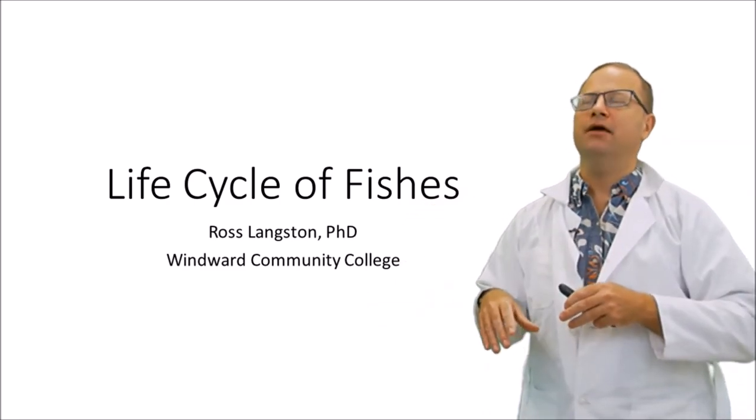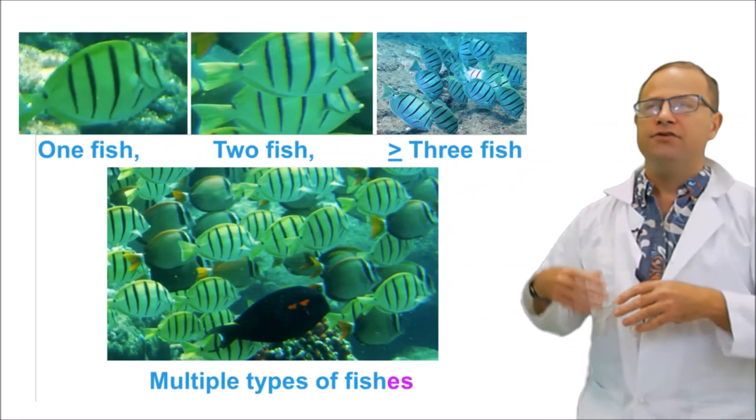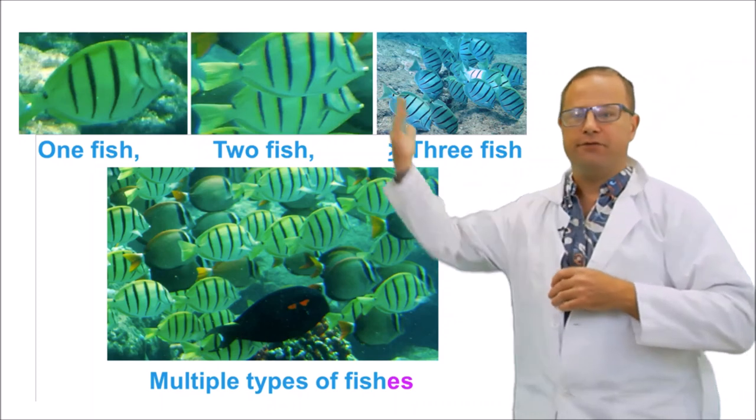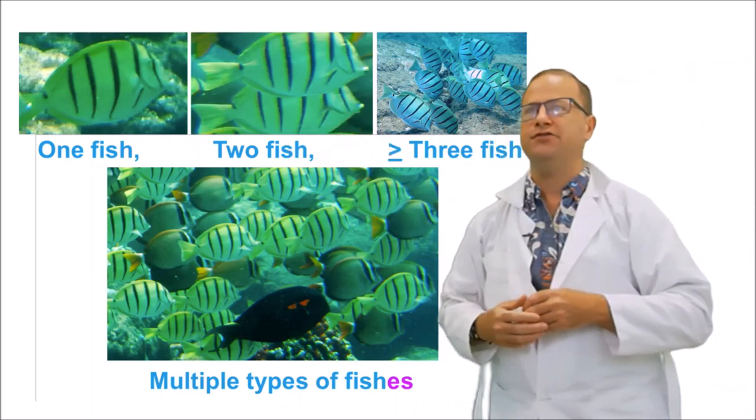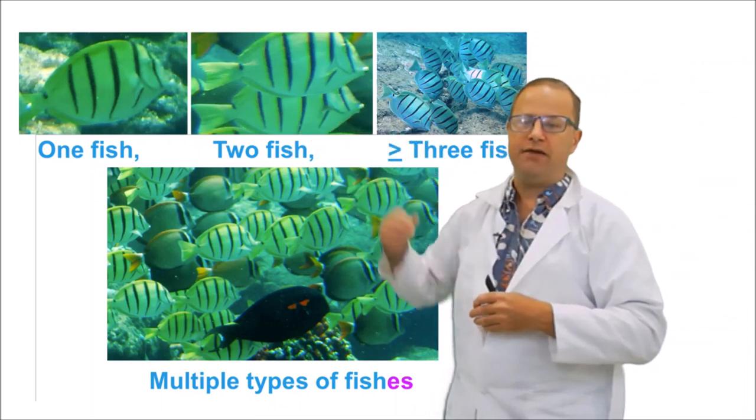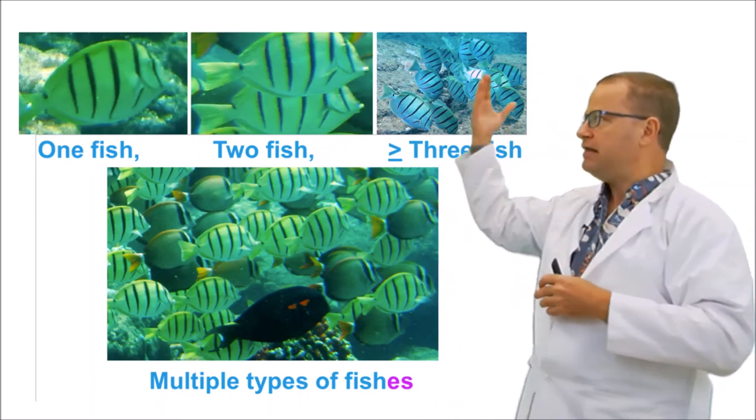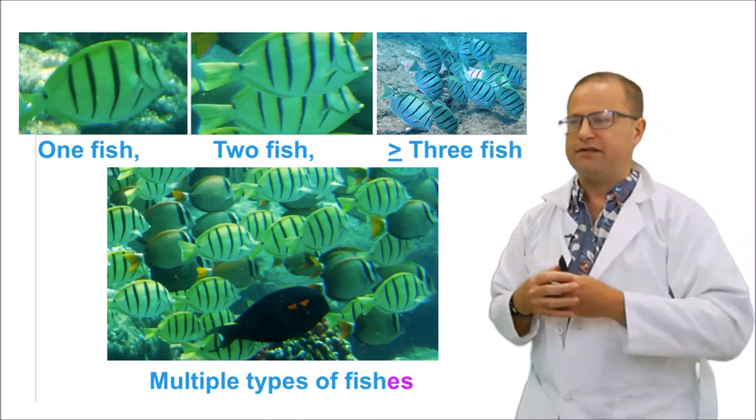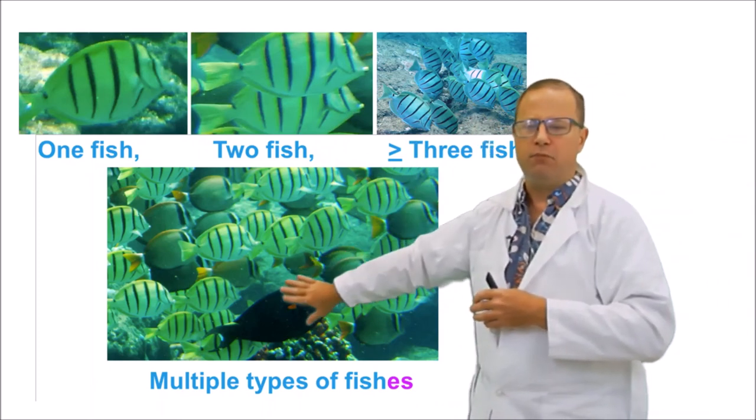Well, as it turns out, they're both right. We definitely use fish as the singular for one individual. For two individuals of the same kind, we say those two fish, and many individuals of the same kind, we say three fish.